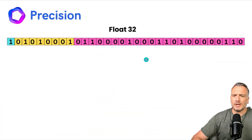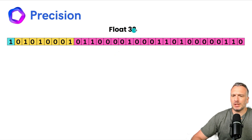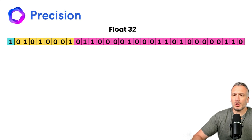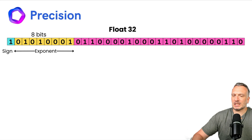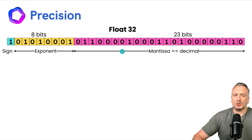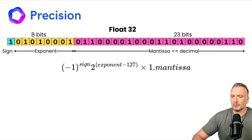Let me explain how those data types were constructed. A Float32 is a data type where we represent a floating point number using 32 bits — 1s or 0s. We use the first bit to represent the sign, the next 8 bits to represent the exponent, and the next 23 bits for the decimal points, also called the mantissa. To convert to a floating point number, we use this formula.